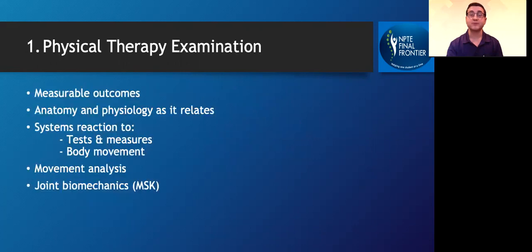If we look at those categories more closely, for the first one, physical therapy examination, you'll be questioned on measurable outcomes, anatomy and physiology as it relates, systems reaction to testing measures and body movement, movement analysis such as ribcage excursion for cardiovascular and pulmonary system or scar mobility for integumentary. You'll also be questioned on joint biomechanics for musculoskeletal system.